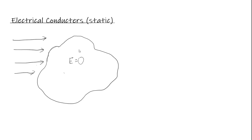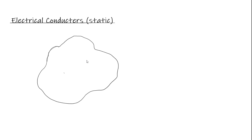The electric field will always be zero inside the conductor regardless of what is happening outside. We haven't shown exactly how this happens, but basically the charges distribute themselves on the surface exactly so that the field is zero. That's pretty remarkable — we can't even calculate that for an arbitrary shape, but the electrons are able to move to the exact positions to figure that out.